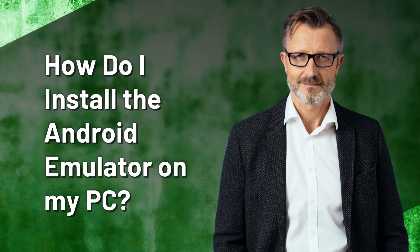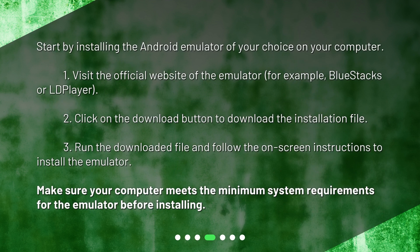How do I install the Android emulator on my PC? Start by installing the Android emulator of your choice on your computer. 1. Visit the official website of the emulator, for example, BlueStacks or LD Player. 2. Click on the Download button to download the installation file. 3. Run the downloaded file and follow the on-screen instructions to install the emulator. Make sure your computer meets the minimum system requirements for the emulator before installing.